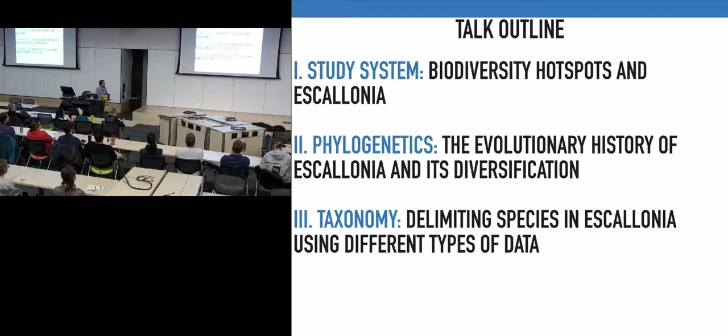Today I'm going to be talking about a particular plant system — a genus called Escalonia in the angiosperms. I'm going to describe the context of where these plants occur and address two main questions: what are the evolutionary patterns and processes that we can infer for diversification in these plants in hotspots, and what species really are, and how that relates to our understanding of diversification.